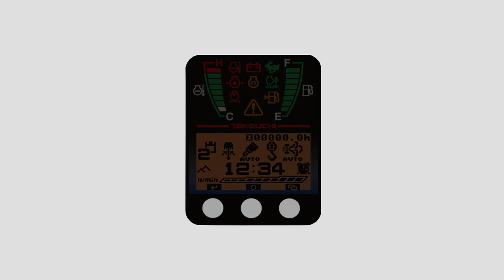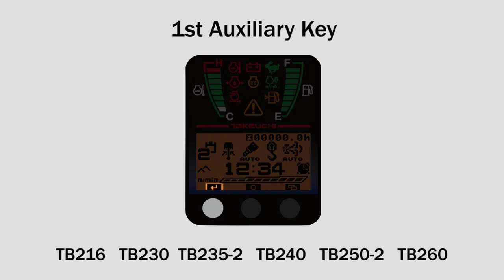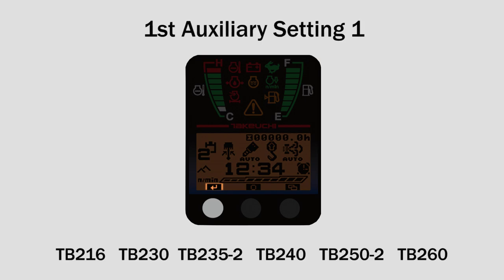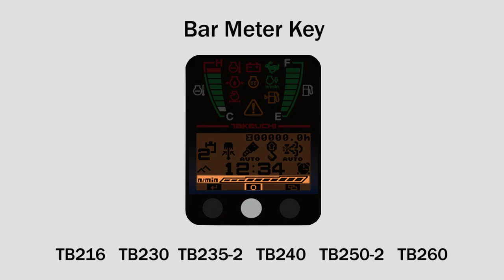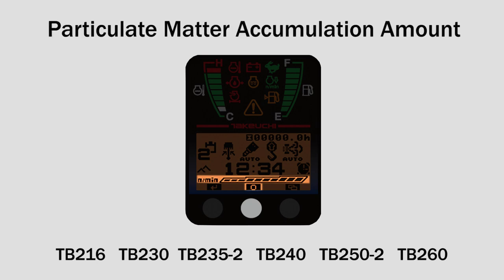Three navigation buttons are positioned below the LCD monitor. The first button is the first auxiliary key, which changes your auxiliary flow preset from first auxiliary setting 1 to setting 2 to setting 3. The second button is the bar meter key, which changes the meter at the bottom of the screen between engine load factor, engine RPM, and particulate matter accumulation amount.